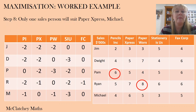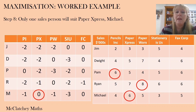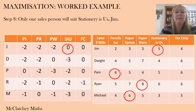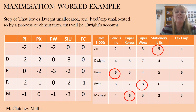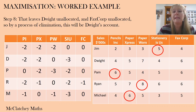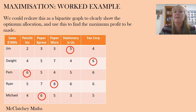Looking down the Paper Express column, there's only one zero and that's with Michael — so he's the best person to sell to Paper Express. Looking at Stationery is Us, there's only one zero and that's Jim, so Jim has been allocated. For our last column, Fax Corp, four people have a zero there, but three have already been allocated. That leaves just Dwight unallocated, and Fax Corp unallocated — so process of elimination tells us Dwight goes to Fax Corp.